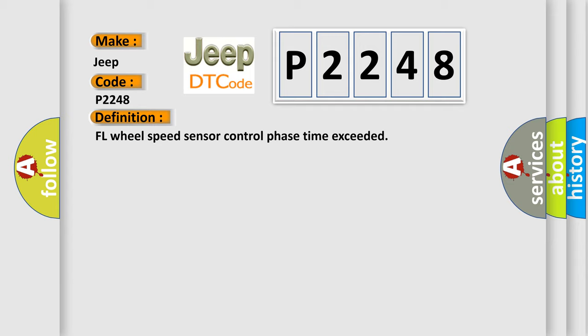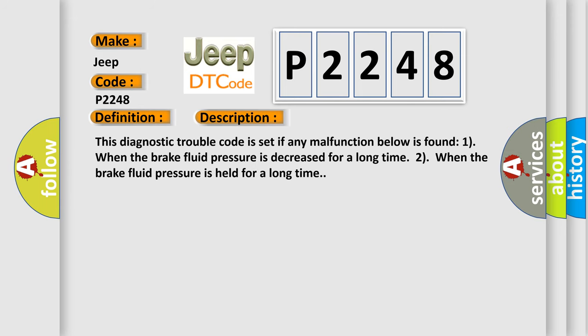And now this is a short description of this DTC code. This diagnostic trouble code is set if any malfunction below is found. One, when the brake fluid pressure is decreased for a long time. Two, when the brake fluid pressure is held for a long time.